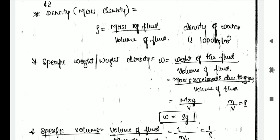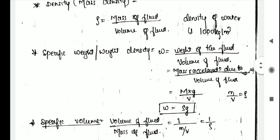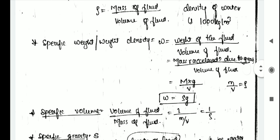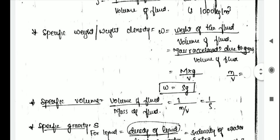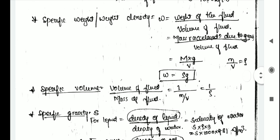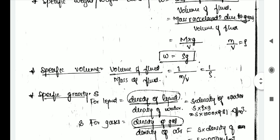The specific weight of water is rho into G, where rho is 1000 and G is 9.81, giving a value in terms of Newton per meter cube in SI units. The next property is specific volume.